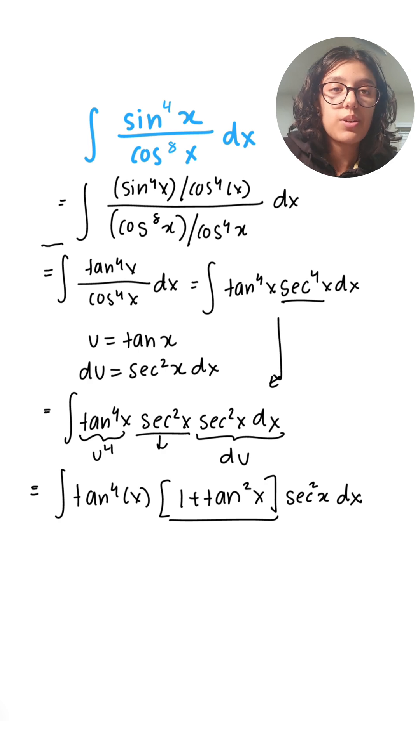So this is our trigonometric identity: 1 + tan²x equals sec²x. And now we can substitute everything in terms of u.